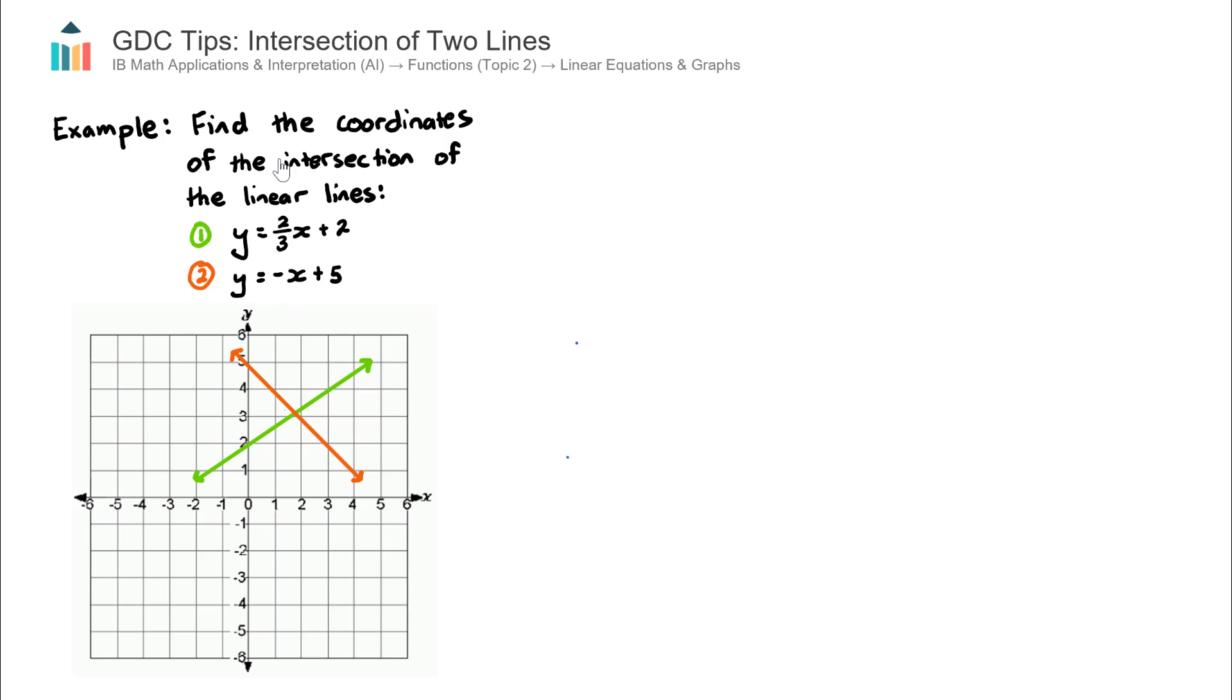Looking at our example question here, we are asked to find the coordinates of the intersection of these two linear lines. You can see that these are the lines here. We have line one, the green line, line two, the orange line, and we want to find this point here, the coordinate of the intersection.